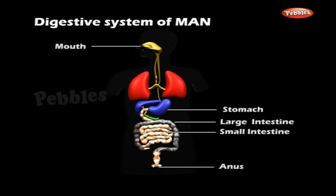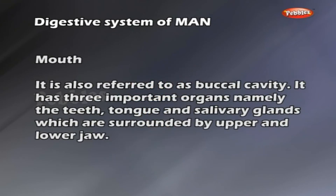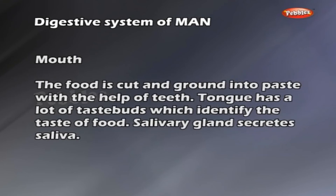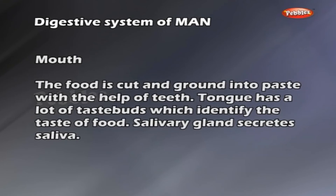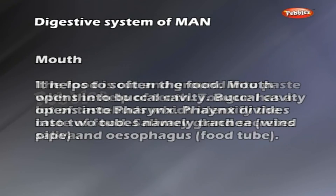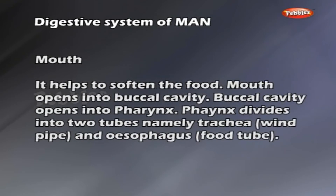The mouth is also referred to as the buccal cavity. It has three important organs: the teeth, tongue and salivary glands, which are surrounded by upper and lower jaw. The food is cut and ground into paste with the help of teeth. The tongue has taste buds which identify the taste of food. Salivary glands secrete saliva, which helps to soften the food. The buccal cavity opens into the pharynx.